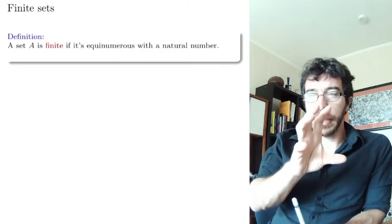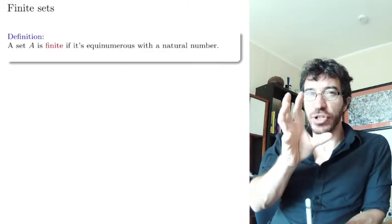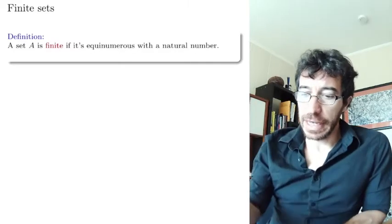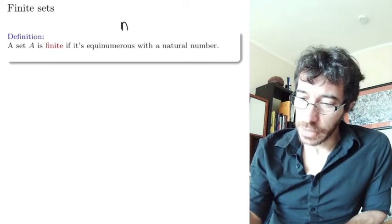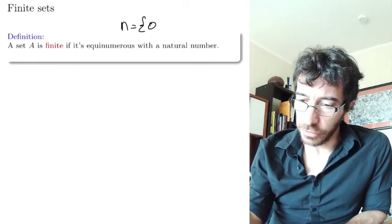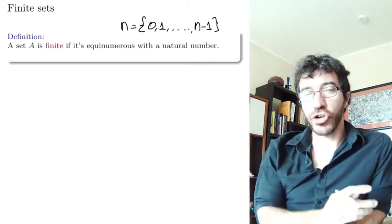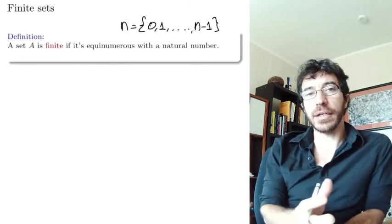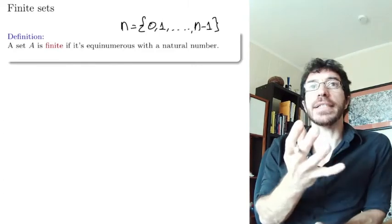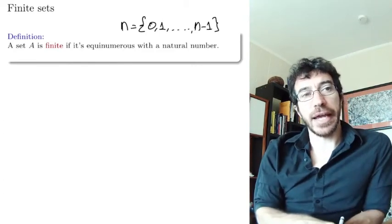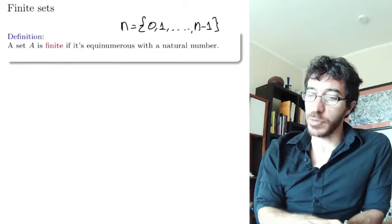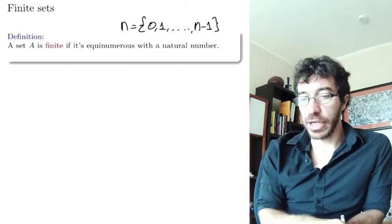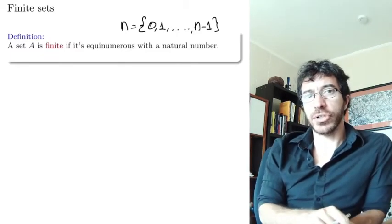Recall that a natural number n is defined to be the set of all previous elements. So the number n is itself a set that has n elements. That's why we're going to define a set to be finite: equinumerous with a natural number.